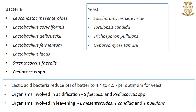The organisms responsible for acidification of the Idli batter have been identified as Streptococcus fecalis and Pediococcus feces. Leavening is brought about by Leuconostoc mesenteroides, and the yeast Torulopsis candida and Trichosporon pullulans are also found in traditional Idli. The role of lactic acid bacteria is to reduce the pH of the batter to levels of 4.4 to 4.5, which is optimum for the activity and growth of yeast.